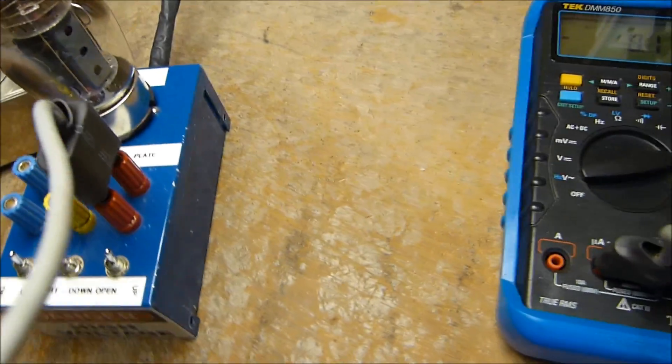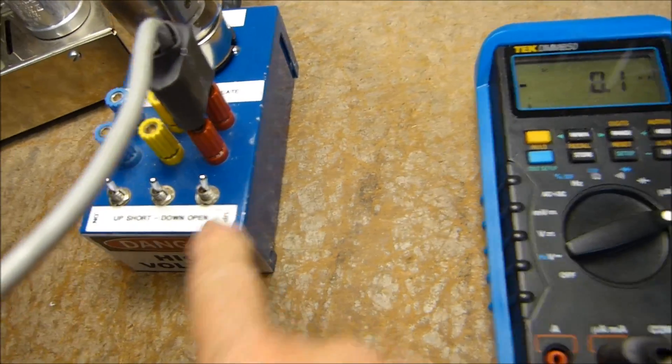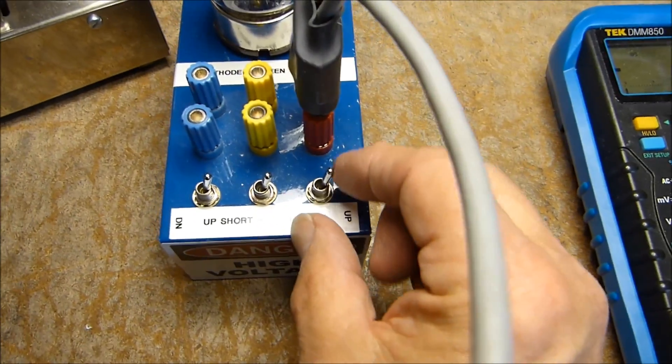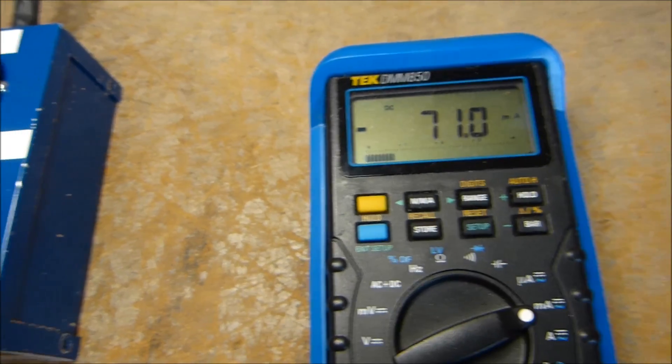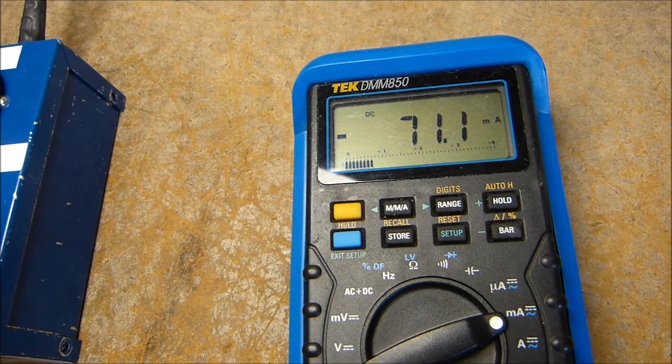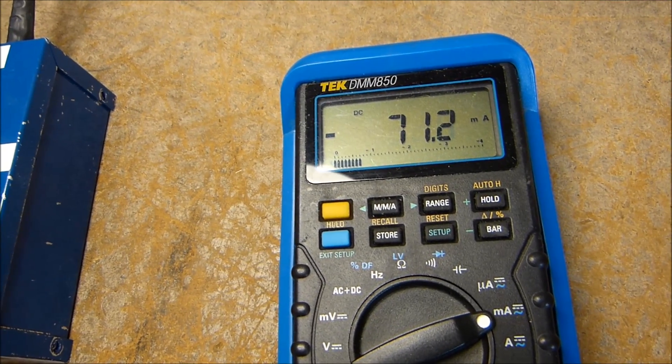See, it's actually measuring just a little bit because the switch doesn't completely short it, but that's okay. All we do to measure the plate current is unshort that switch. That unshorts the red lead and we measure 71 milliamps, which is about right for a 6550 in this Dynaco Mark III amp.